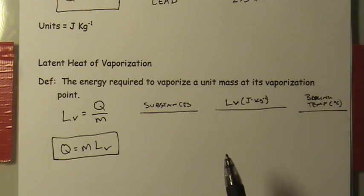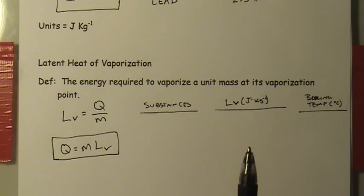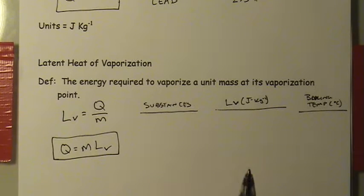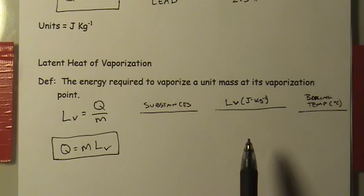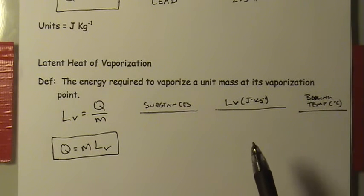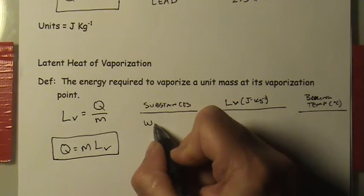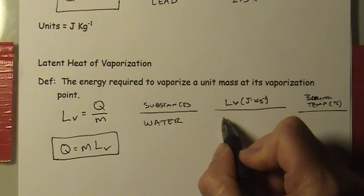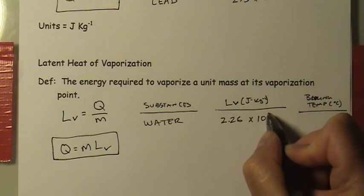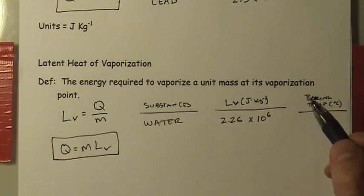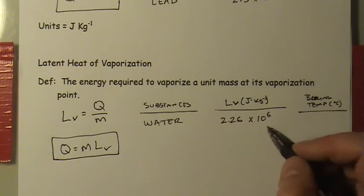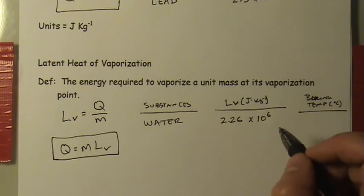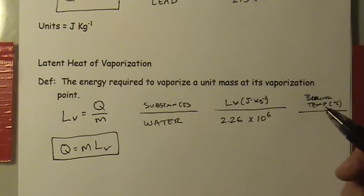The reason vaporization requires more energy is what's physically happening during a phase change: we're increasing the distance between molecules. Going from solid to liquid is a tiny increase in molecular spacing, but going from liquid to gas tremendously increases the distance between molecules. So the latent heat of vaporization is almost always significantly larger than the latent heat of fusion. For water, it is 2.26 × 10^6 joules per kilogram — about 2.3 million joules — compared to only 334,000 to melt the same quantity of ice.